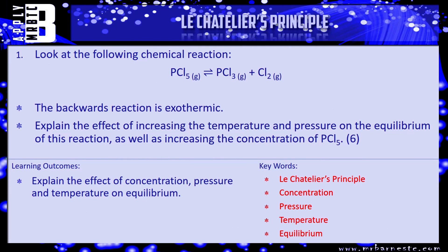I've got an applied question for you. We've got a reversible reaction: PCl5 goes to PCl3 and Cl2, and back again. It tells you that the backwards reaction is exothermic. Explain the effect of increasing the temperature and pressure on the equilibrium of this reaction, as well as increasing the concentration of PCl5. Think step by step — will increasing the temperature increase or decrease the yield of PCl3 or Cl2? What happens to the pressure in terms of number of molecules? And what does increasing the concentration of PCl5 do to the amount of Cl2? Pause the video, have a go, and we'll see how you've done.